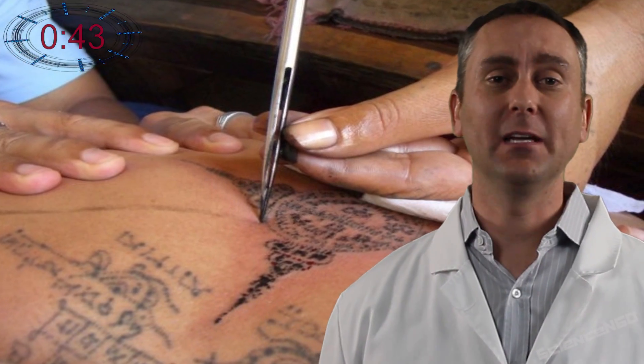Other early tattoo methods include spikes, rakes, and threads sewn through the skin. The one thing they all have in common is that they're permanent. But how?